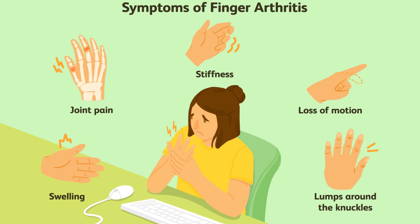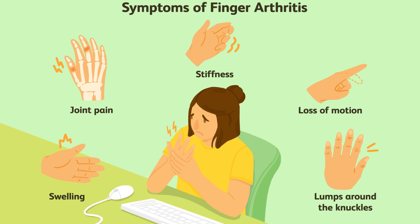Now let's see the symptoms. Symptoms can vary from case to case due to the variety of different types of arthritis, but the main types have some symptoms in common: joint pain, tenderness and stiffness, restricted movement of joints, inflammation in and around your joints, warm red skin over the affected joints, and weakness and muscle wasting.